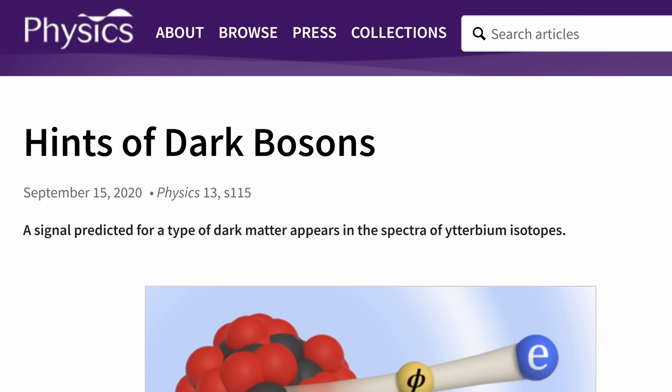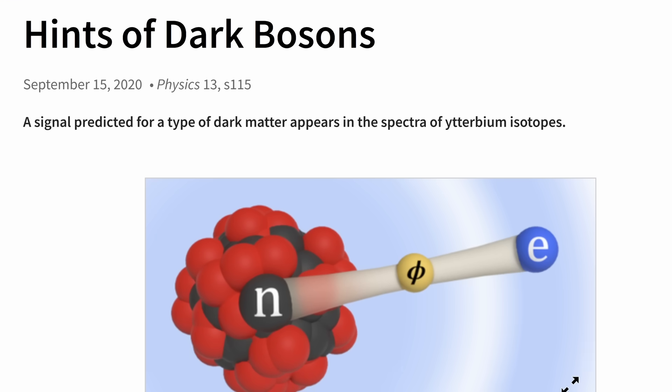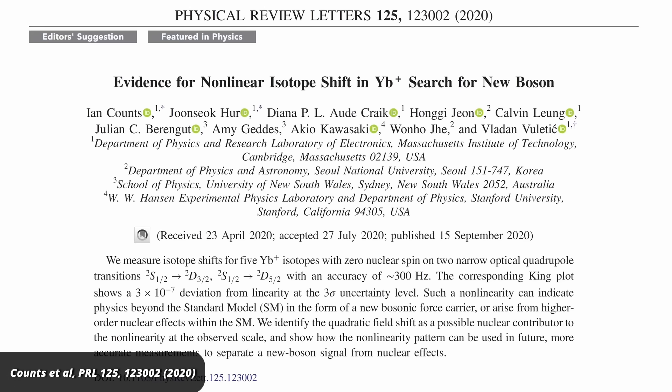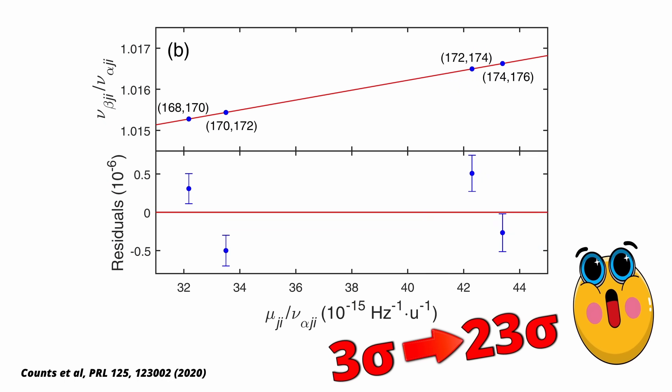This anomaly is young. It was first detected in 2020 by a group at MIT. They studied atoms of Ytterbium, which is a metal with atomic number 70. The anomaly was originally at roughly three sigma, but it's now jumped to a stunning 23 sigma.